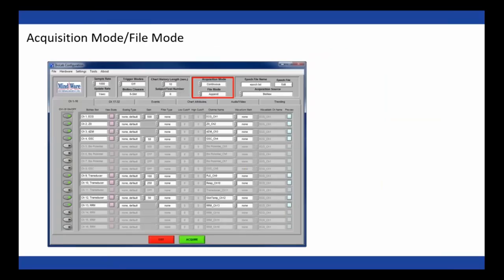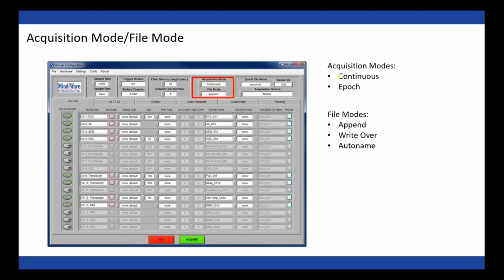Moving on from triggering, we'll talk about acquisition mode and file mode together because they're connected. We have two acquisition modes — continuous and epic mode — and three file modes: append, write over, and auto name. The file modes mostly pertain to continuous mode. In epic mode, the file mode is always auto name because epic mode takes control of naming files for you.